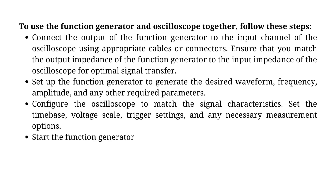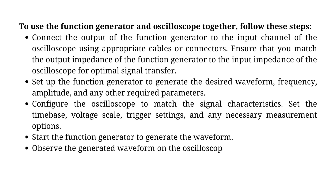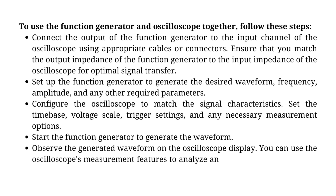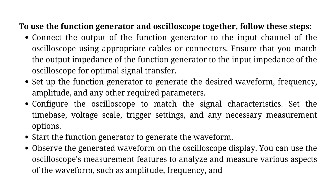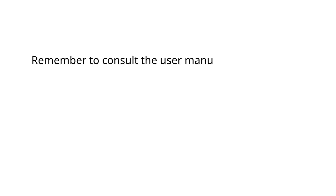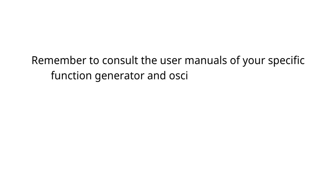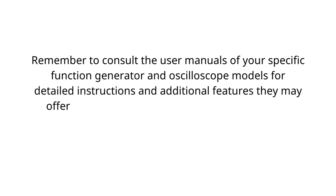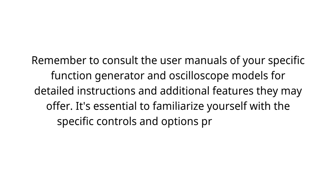Start the function generator to generate the waveform and observe it on the oscilloscope display. You can use the oscilloscope's measurement features to analyze and measure various aspects of the waveform, such as amplitude, frequency, and timing parameters. Remember to consult the user manuals of your specific function generator and oscilloscope models for detailed instructions and additional features they may offer. It's essential to familiarize yourself with the specific controls and options provided by the equipment you are using.